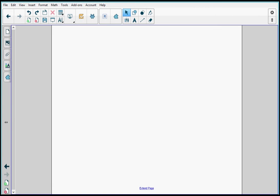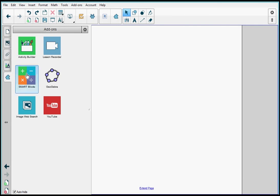As you can see I have my notebook file open to a new page. On the left tabs I'm going to select the add-on tab and then I'm going to select smart blocks.